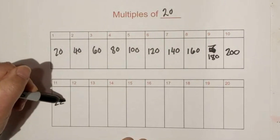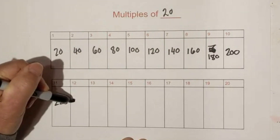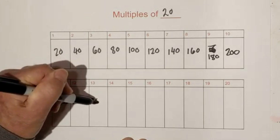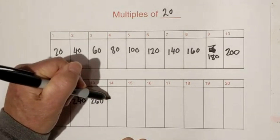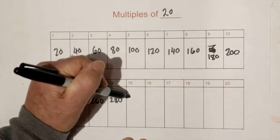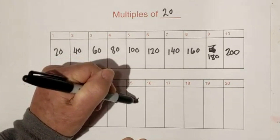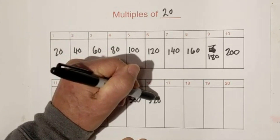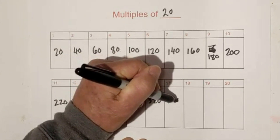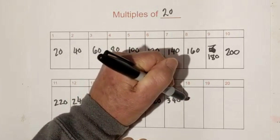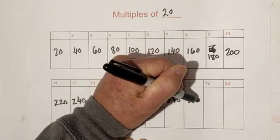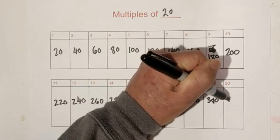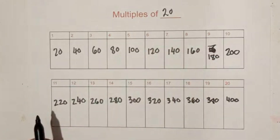Now let's start with 11. We have 220, 240, 260, 280, 300. And then it repeats again: 320, 340, 360, 380.